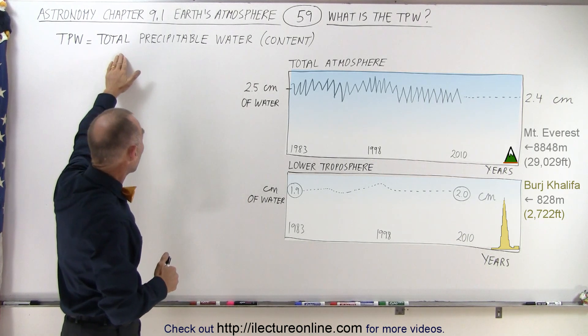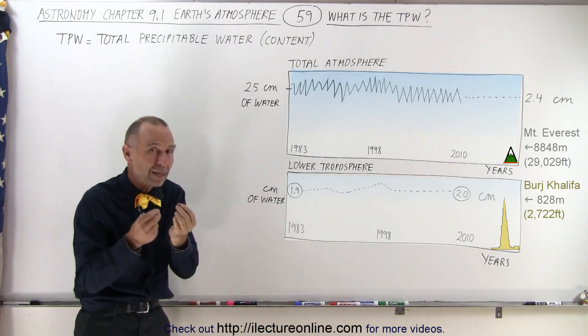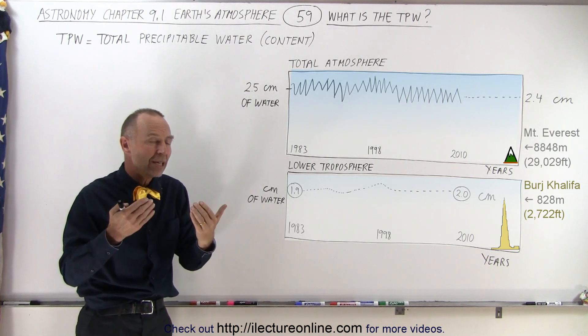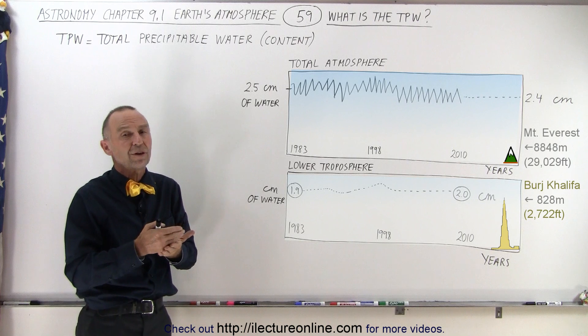So it turns out that total precipitable water content may be a better measure to see how much water there is in the atmosphere.